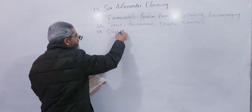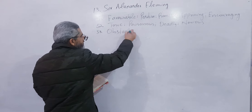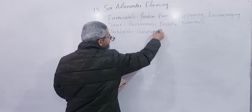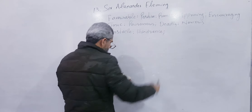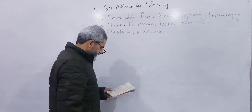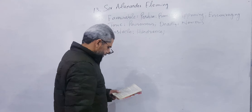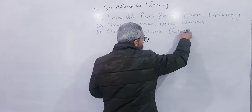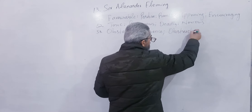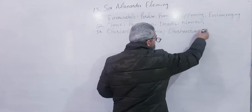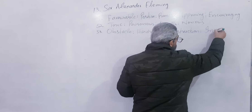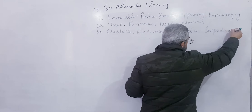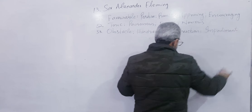Number 53: Obstacle — rukawaat (obstruction). Write hindrance, obstruction, impediment.